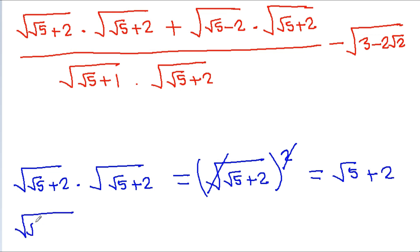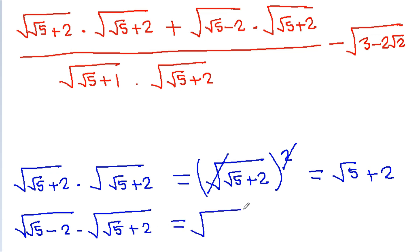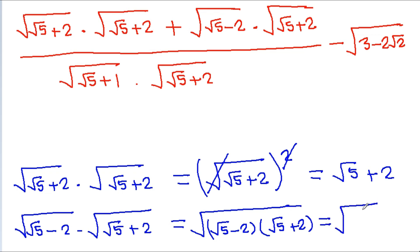A square root of (root 5 minus 2) into a square root of (root 5 plus 2) equals a square root of (root 5 minus 2)(root 5 plus 2). Using (a minus b)(a plus b) equals a squared minus b squared, root 5 squared is 5, minus 2 squared is 4, giving root 1, which equals 1.